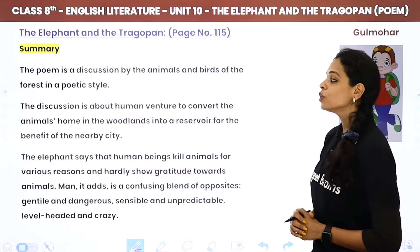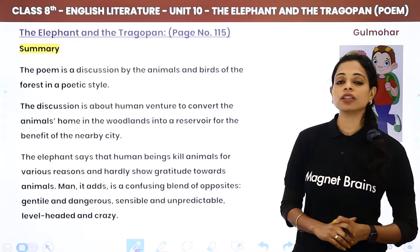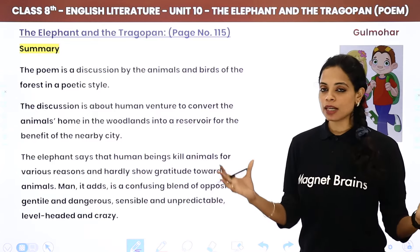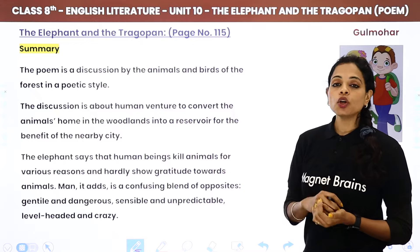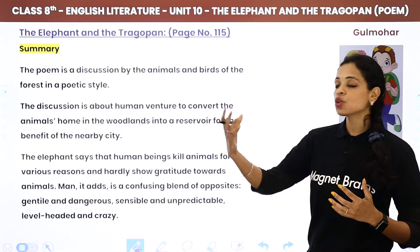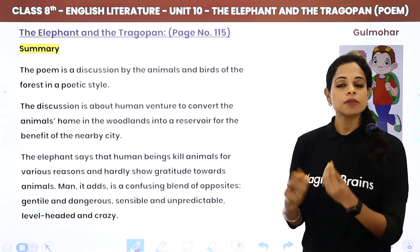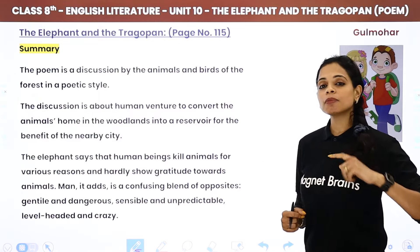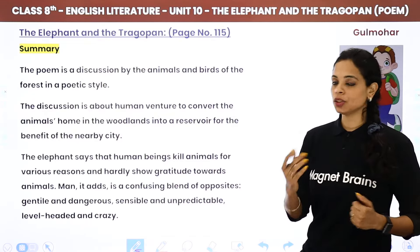The discussion is about the human venture to convert the animals' home in the woodlands into a reservoir for the benefit of the nearby city. The animals are discussing that humans want to build a reservoir in this big jungle — which will destroy the forest, and where will the animals and birds living there go? That is why this discussion is happening.